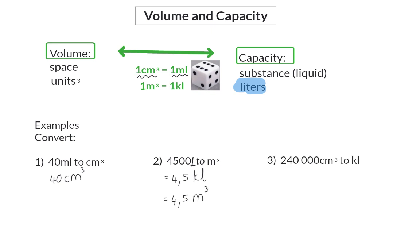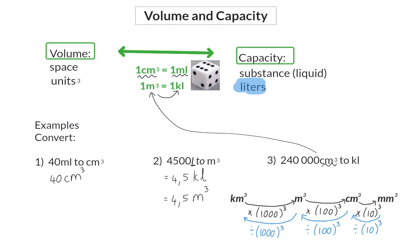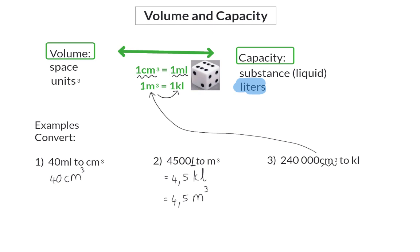In Example 3, we need to change 240,000 cubic centimeters to kiloliters. First, convert cubic centimeters to cubic meters — divide by 100 three times, meaning divide by a million and move the decimal point six places to the left. This gives us 0.24 cubic meters, which equals 0.24 kiloliters.